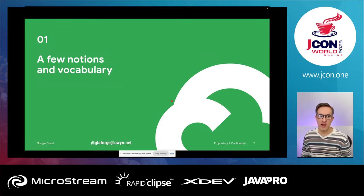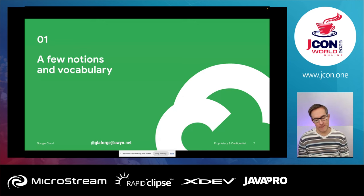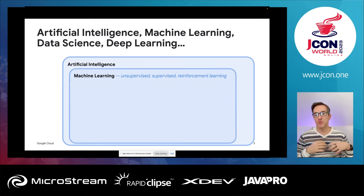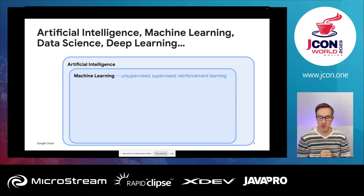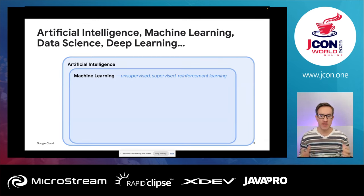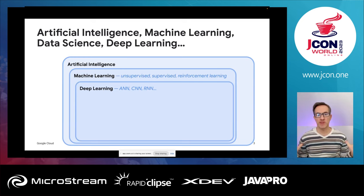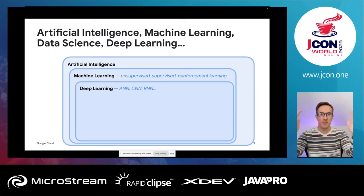Let's dive in. I'd like to start with a few notions of vocabulary. To set the stage, we're talking about artificial intelligence — more precisely a sub-part of it, which is machine learning. There are different ways to do machine learning: unsupervised learning, supervised, et cetera. That's how software systems learn from data. We've got deep learning, which is all those machine learning systems that actually use deep neural networks.